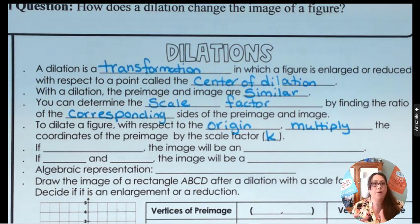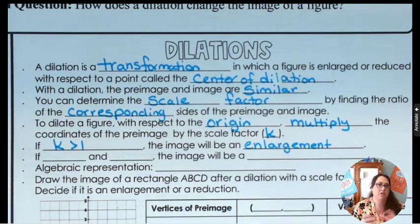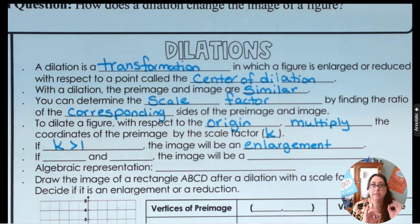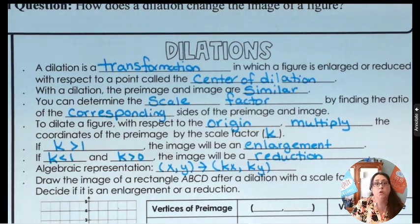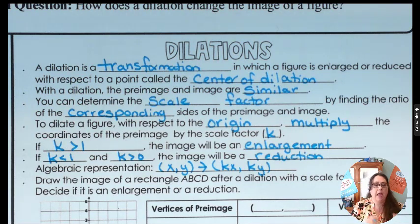If k is greater than 1, this is going to be an enlargement. If k is between 0 and 1 — in other words, if it's a fraction or a decimal between 0 and 1 — it's going to be a reduction. Your original ordered pair is (x, y), so your new ordered pair is going to be (kx, ky): multiply your x-coordinate by k and your y-coordinate by k.